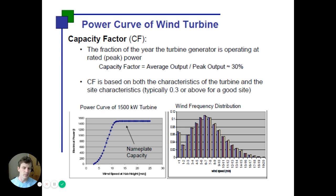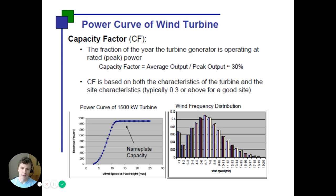Another important term used for renewable energy — both wind and solar — is the capacity factor. The capacity factor is a value between zero and one representing the fraction of the year that the turbine generator is operating at its maximum installed capacity. One thing that controls capacity factor is the power curve of a turbine: as wind speeds increase, electricity output increases, but at some point higher wind speeds don't translate to higher power production — there's a theoretical upper limit.